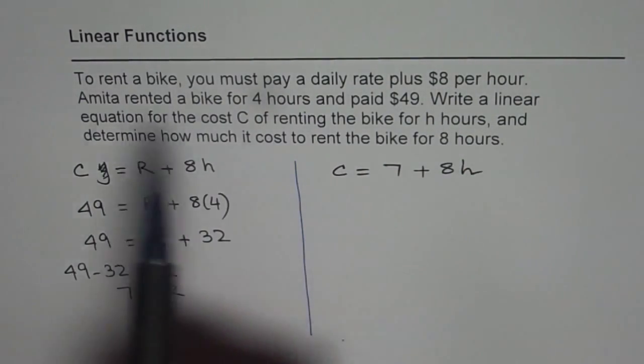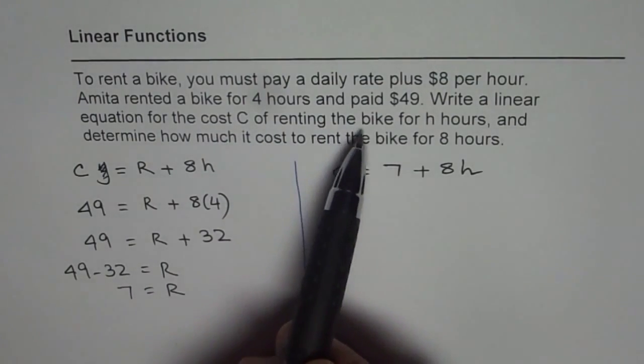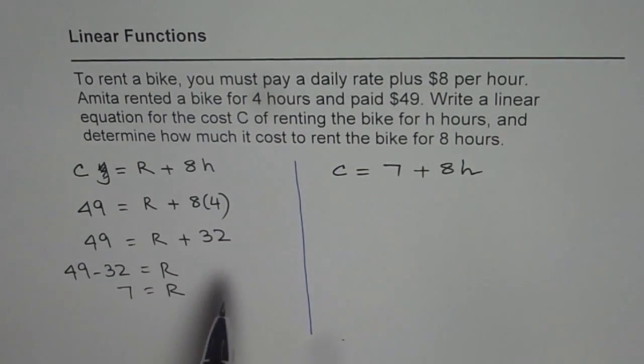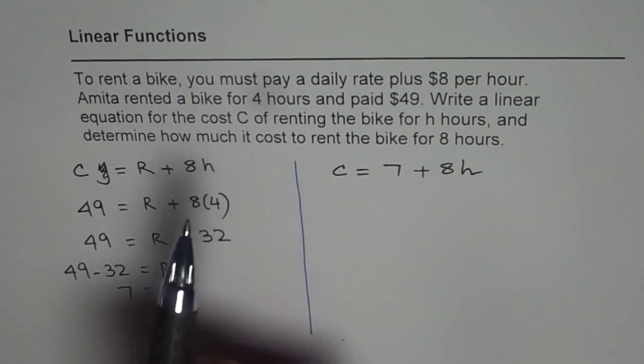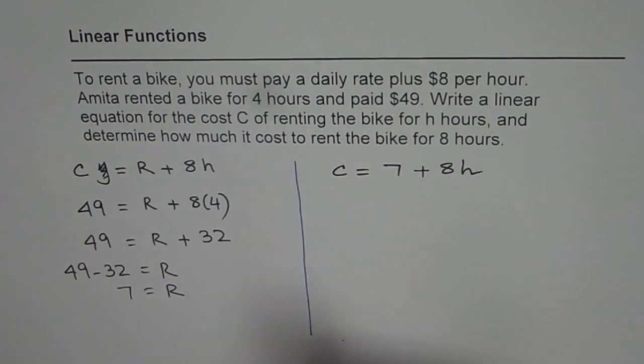Now write a linear equation for the cost C of renting the bike for 8 hours, that is the one. And determine how much it costs to rent the bike for 8 hours. So we can substitute 8 and find our answer.